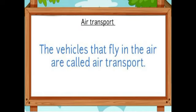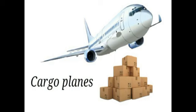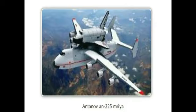The vehicles that fly in the air are called air transport. Some examples are helicopter, hot air balloon, aeroplane, glider, and rocket. Air transport is the fastest and most expensive means of transport, which is used for travelling long distances. The aeroplanes which carry luggage or goods are called cargo planes. The largest plane in the world is the Antonov An-225 Mriya.